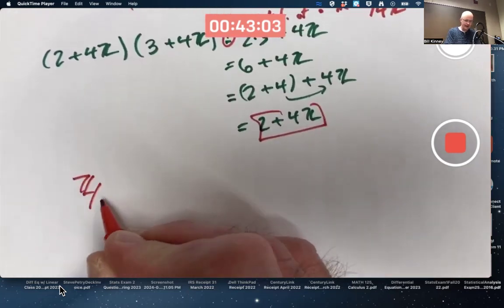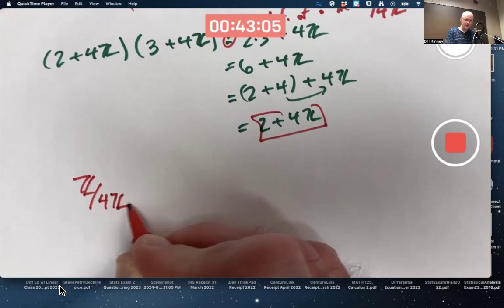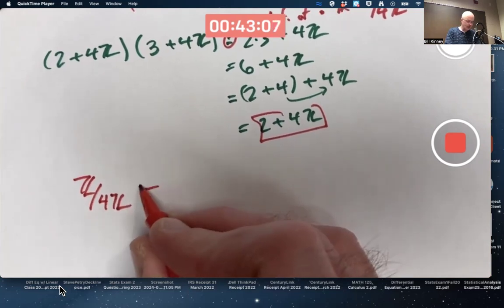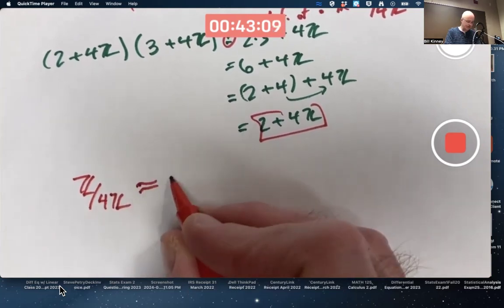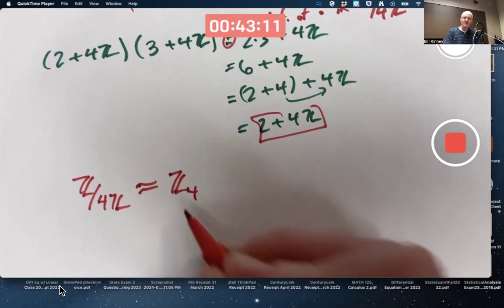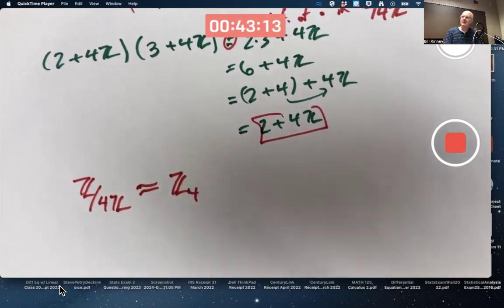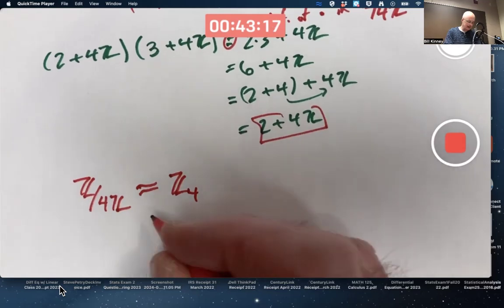The factor ring Z mod 4Z is ring isomorphic to Z₄. These are ring isomorphic.